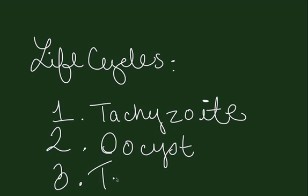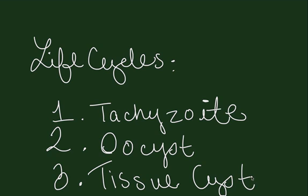The third form is the tissue cyst, which may infect humans, especially those who eat undercooked meat. The tissue cyst, upon ingestion, evolves into the tachyzoite. These are the three parts of the life cycle of Toxoplasma gondii.